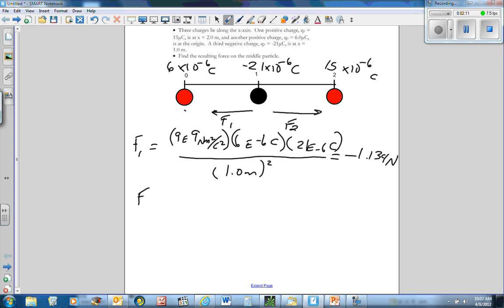So f2 is going to be the same thing except for one number is different. Of course, that is a k, it's a constant. This time, instead of 6, we're going to put 15 e to the negative 6 coulombs. Still have 21 in the middle, negative 6 coulombs. And how far apart are these two? Well, 1 to 2 would be 1 meter apart. And don't forget to square that.